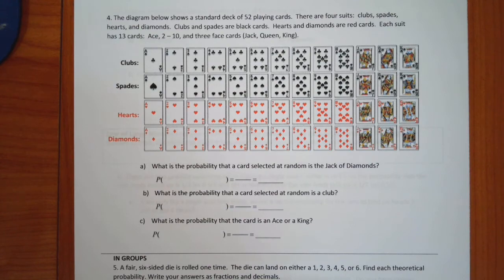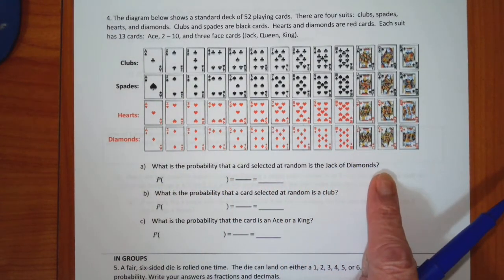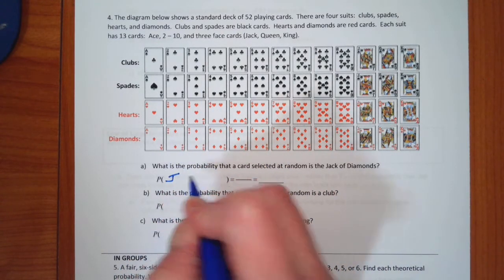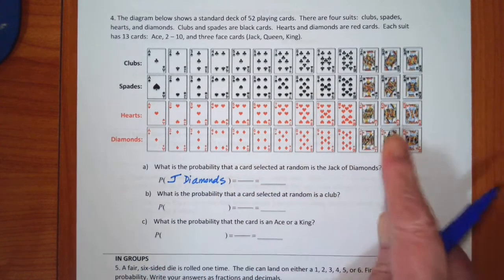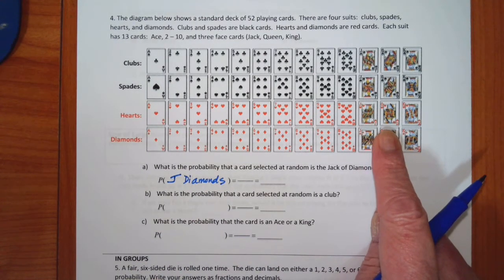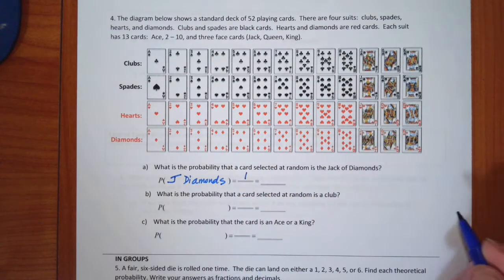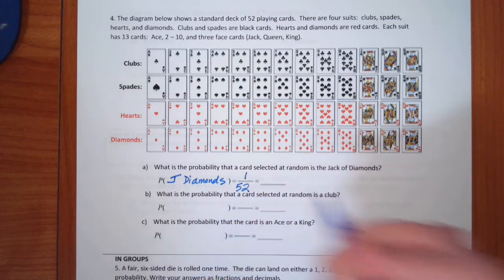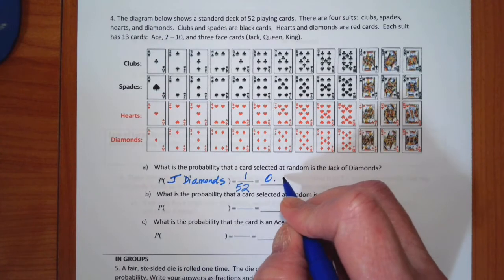Let's find some theoretical probabilities of drawing from a shuffled deck. What is the probability that a card selected at random is the jack of diamonds? There is only one jack of diamonds, so there is one way that can happen out of a total of 52 cards. Converting to a decimal, P(jack of diamonds) = 1/52 = 0.02.